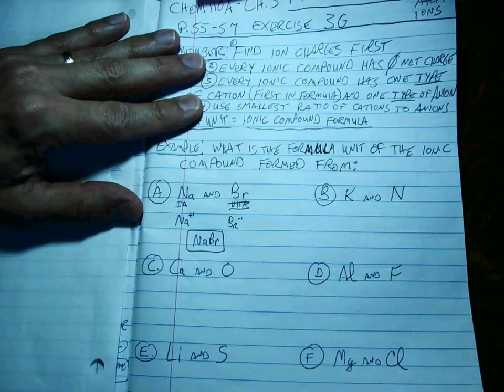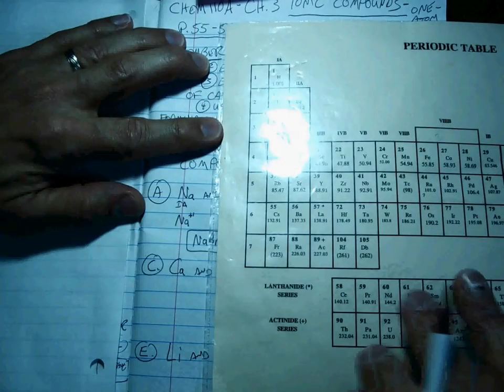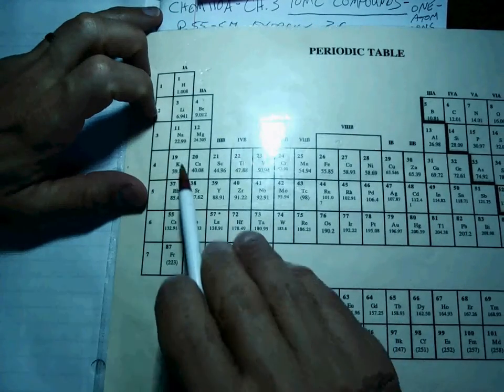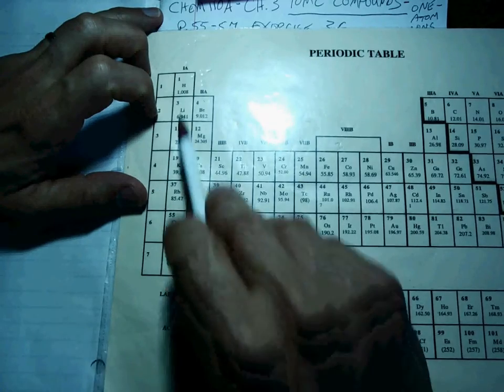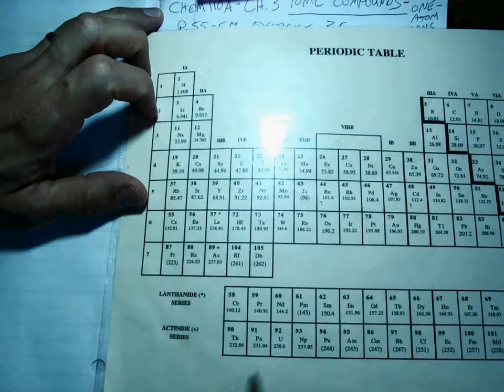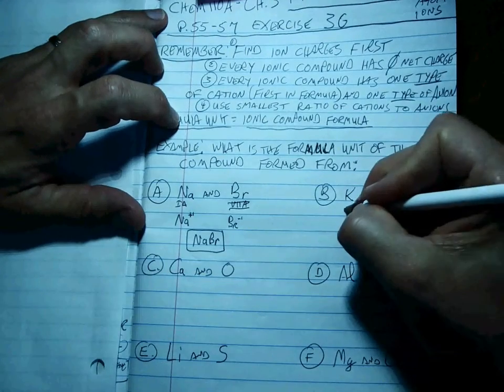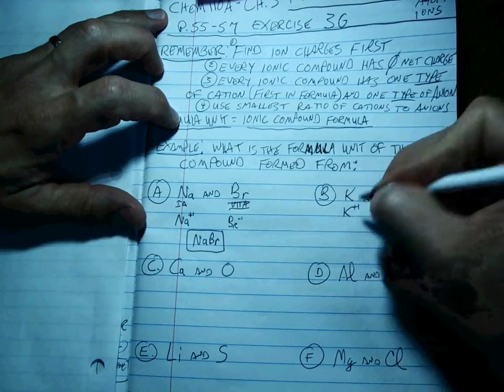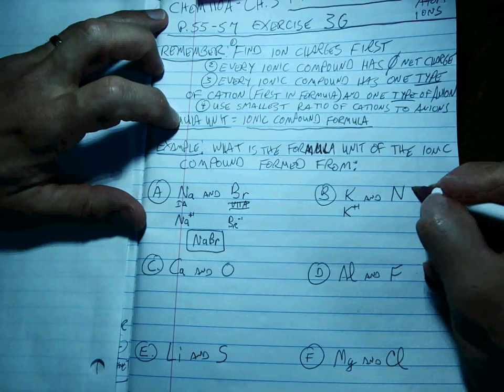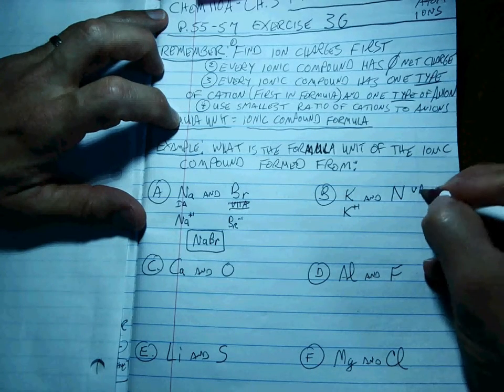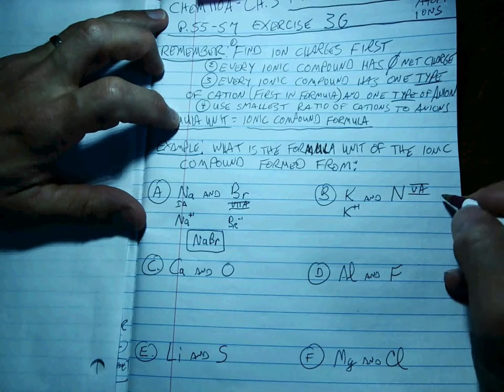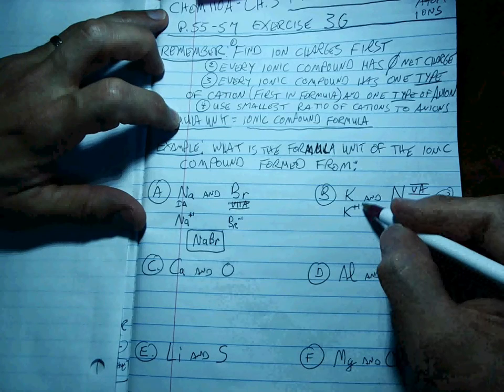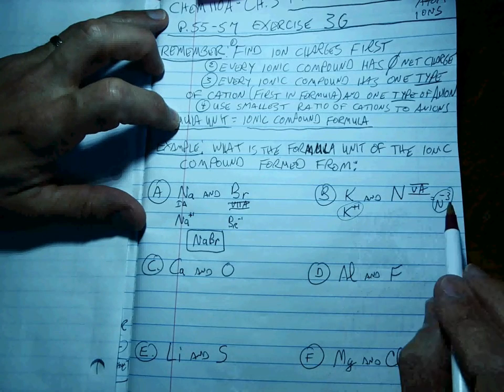Let's try this guy. Now, potassium, as you can see, potassium is in the same group as sodium, so it's 1A again, so it also wants to make a plus 1 charge. But nitrogen is in group 5A, so therefore it's going to want to make a minus 3 anion.